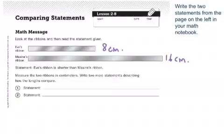I didn't want you to try and measure the screen again like last time when I didn't make myself clear. So I thought I'd go ahead and just write the measurements on there for you. Eve's is 8 centimeters and Maxine's is 16 centimeters. So two more different statements about that. Once you have that done in your notebook, you can come back and check the next slide.